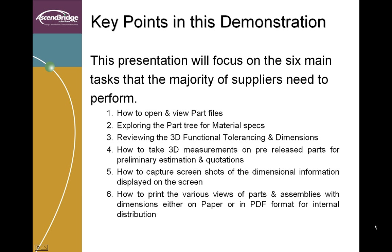We have developed this presentation to show 6 primary tasks which any supplier has to perform on the CATIA V5 data received from their respective customers: how to open and view the part files, exploring the part tree for material specs, reviewing the 3D functional tolerancing and dimensions, taking 3D measurements on pre-released parts for preliminary estimation and quotations, capturing screenshots of the dimensional information displayed on the screen, and printing the various views of parts and assemblies with dimensions either on paper or in a PDF format for distributing to internal departments.